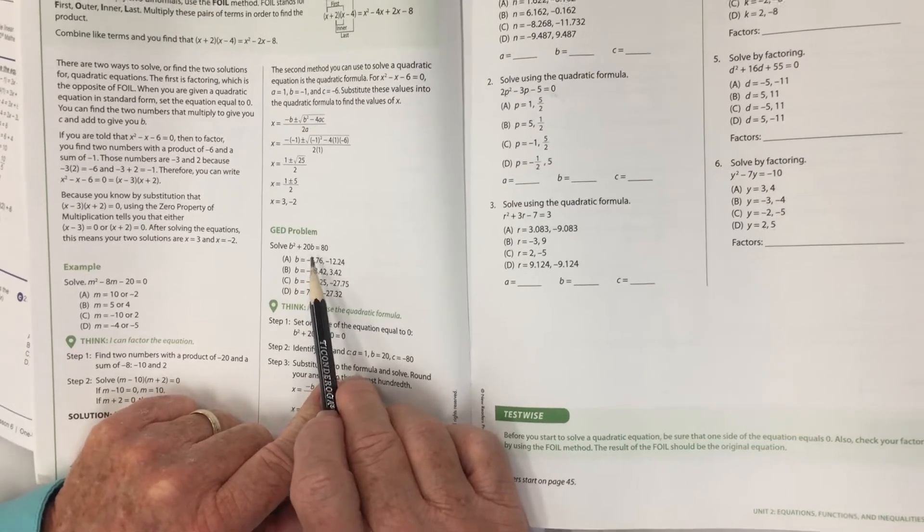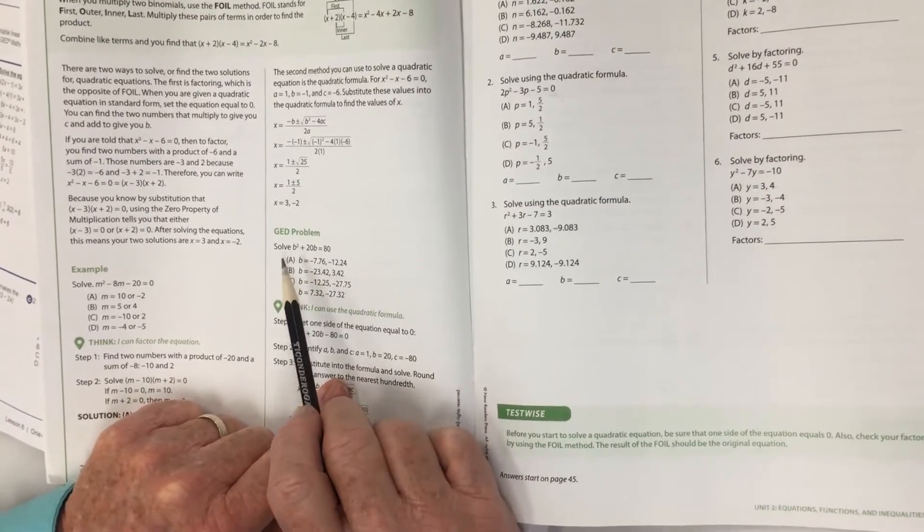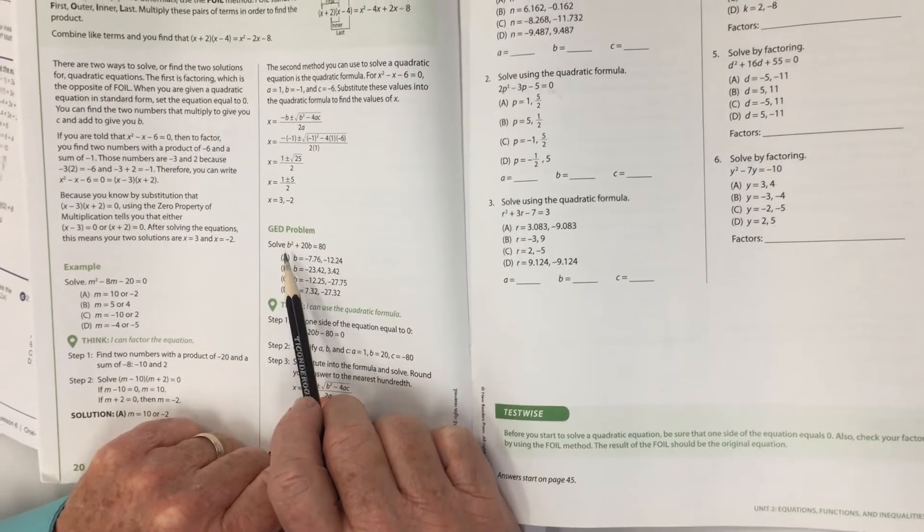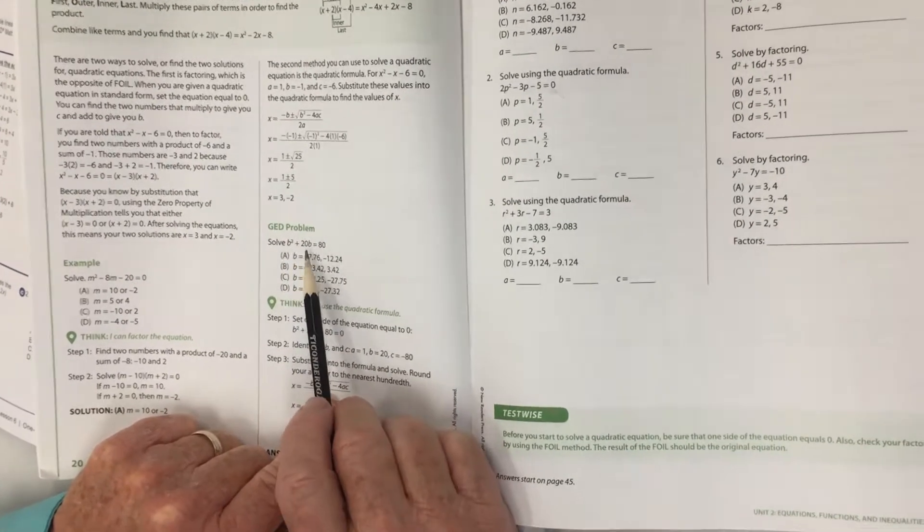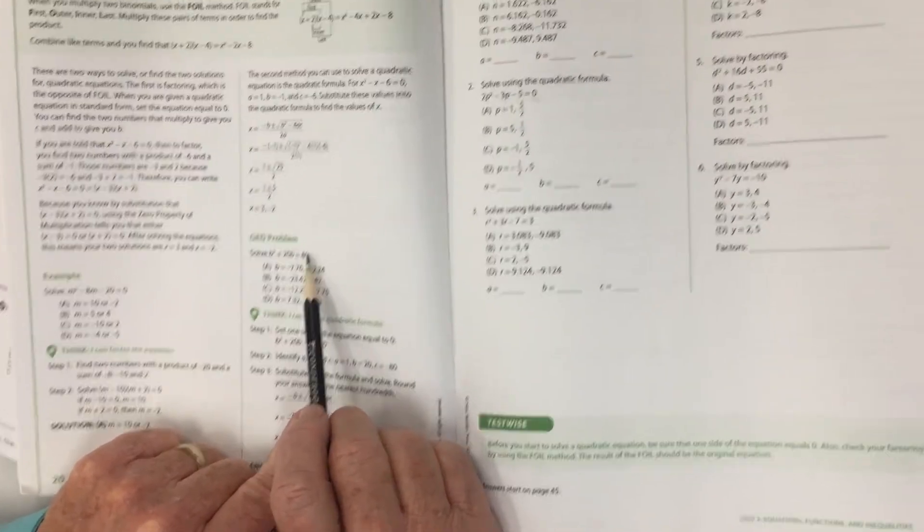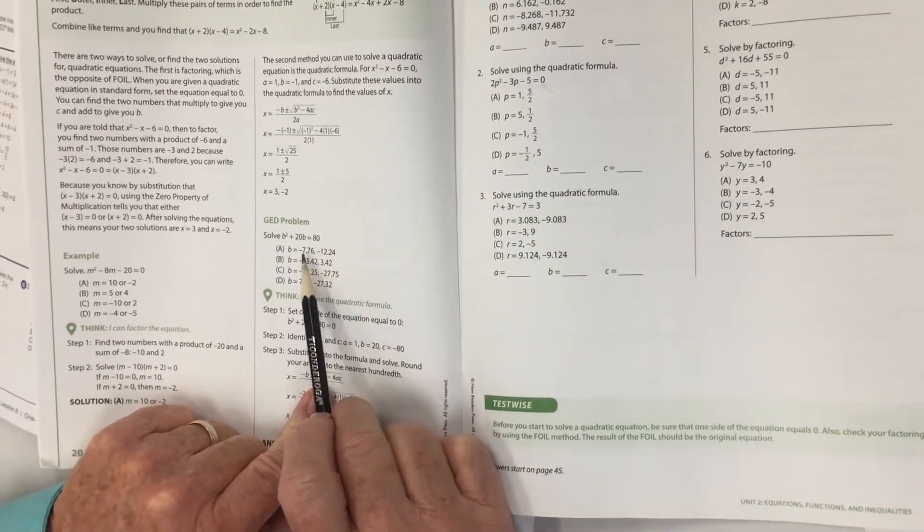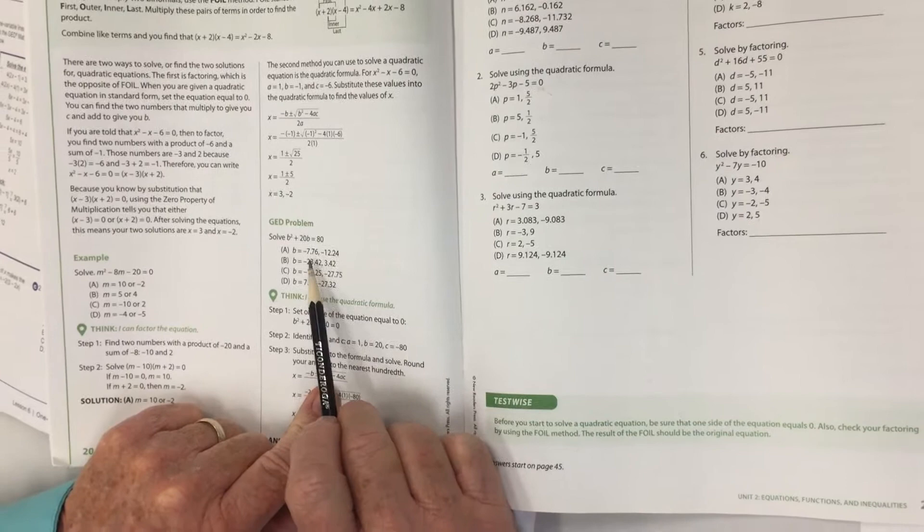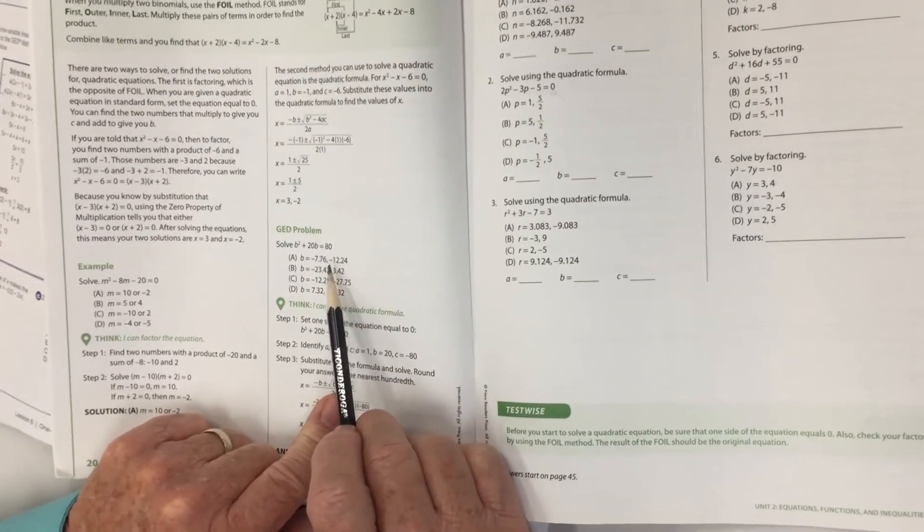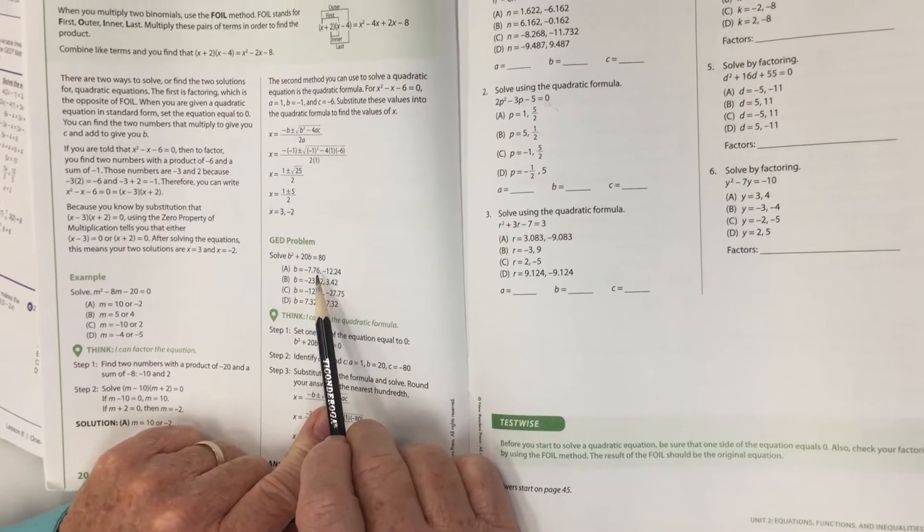The quadratic equation I would like to consider for you is this one: solve b squared plus 20b equals 80. And you see the answers down here, and the answers are not just cut and dried, they're decimals indicating that...